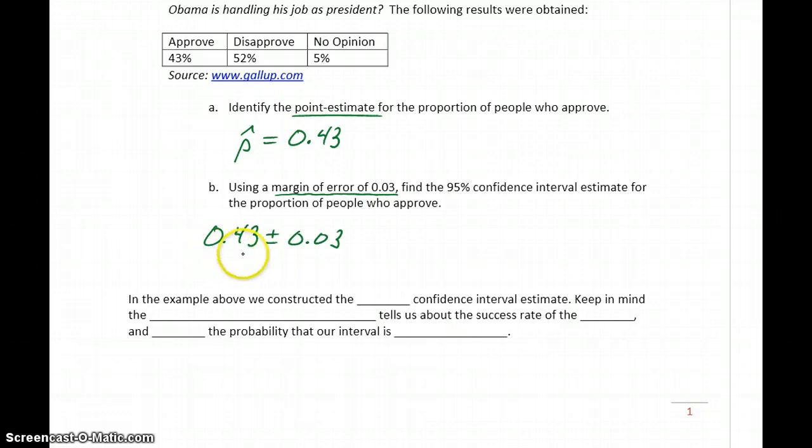Some sources will list a confidence interval like this, pretty common for newspapers. They'll represent that as the sample proportion is 43% plus or minus 3%. And then other sources, more journals or scientific articles, would typically represent this as an interval.